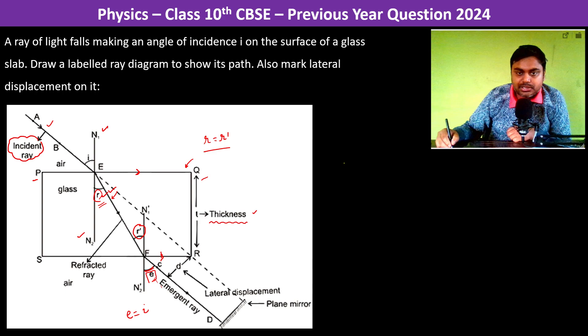At interface PQ we have: 1 × sin i = μ × sin r. And at interface SR we have: μ × sin r = 1 × sin e.